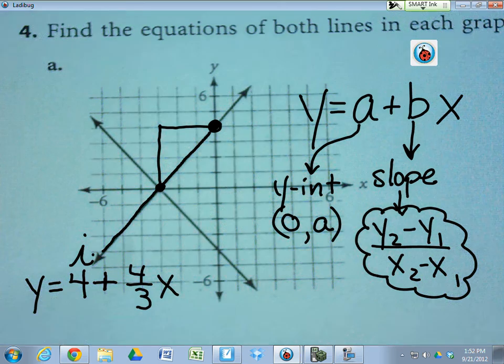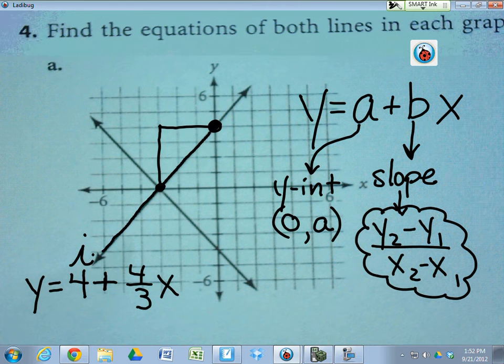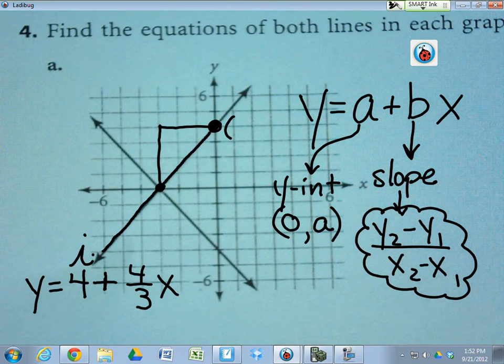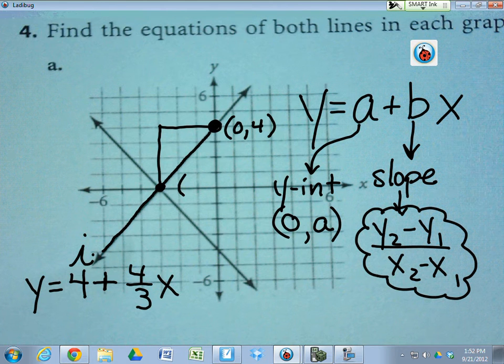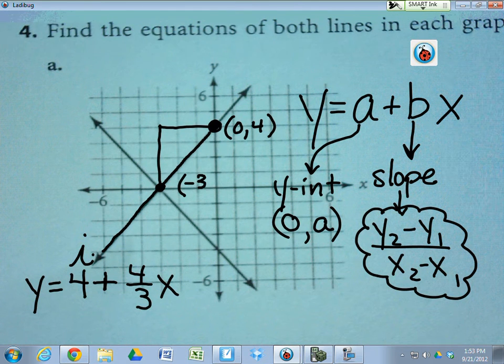We could have gotten that four-thirds by realizing that this point is zero four, and this point is negative three comma zero.